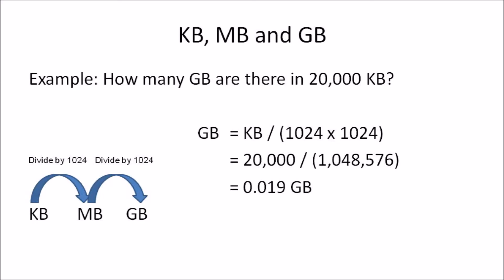Example 3: How many gigabytes are in 20,000 kilobytes? We're converting kilobytes to gigabytes, so we must first convert kilobytes to megabytes, then megabytes to gigabytes — dividing by 1024 twice. The formula is: kilobytes ÷ (1024 × 1024). Substituting: 20,000 ÷ 1,048,576 = 0.019 gigabytes.